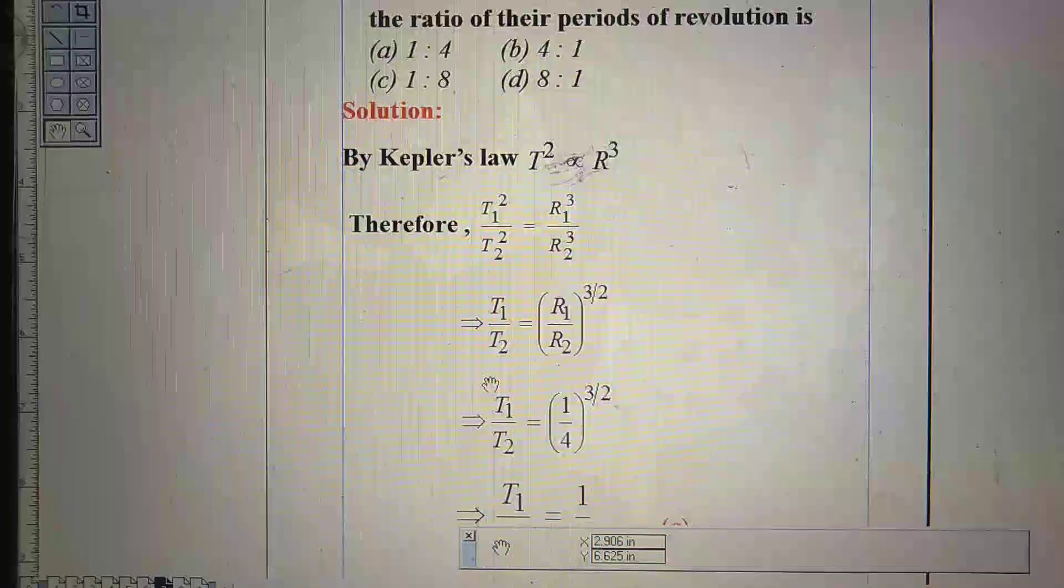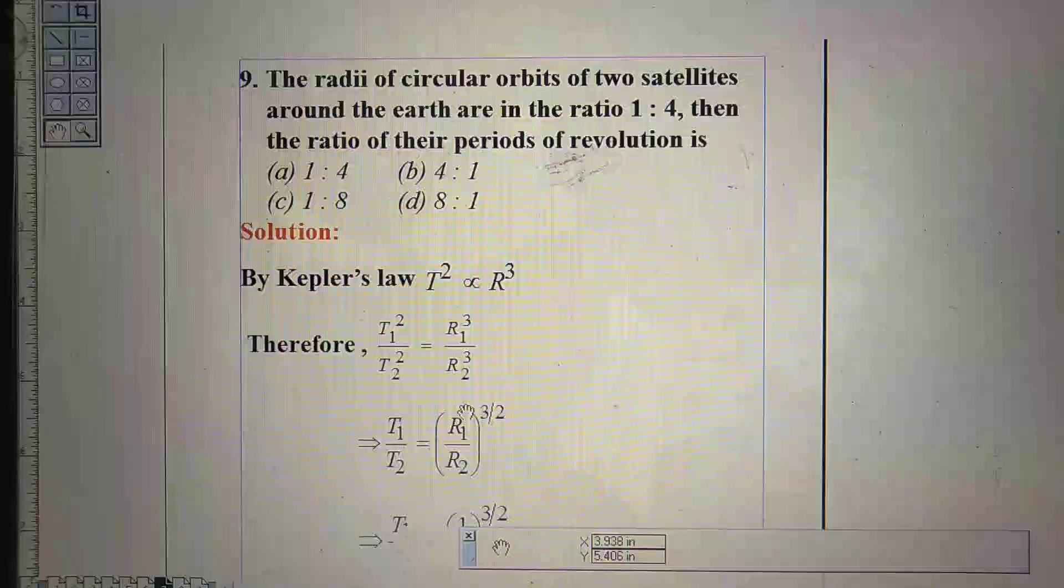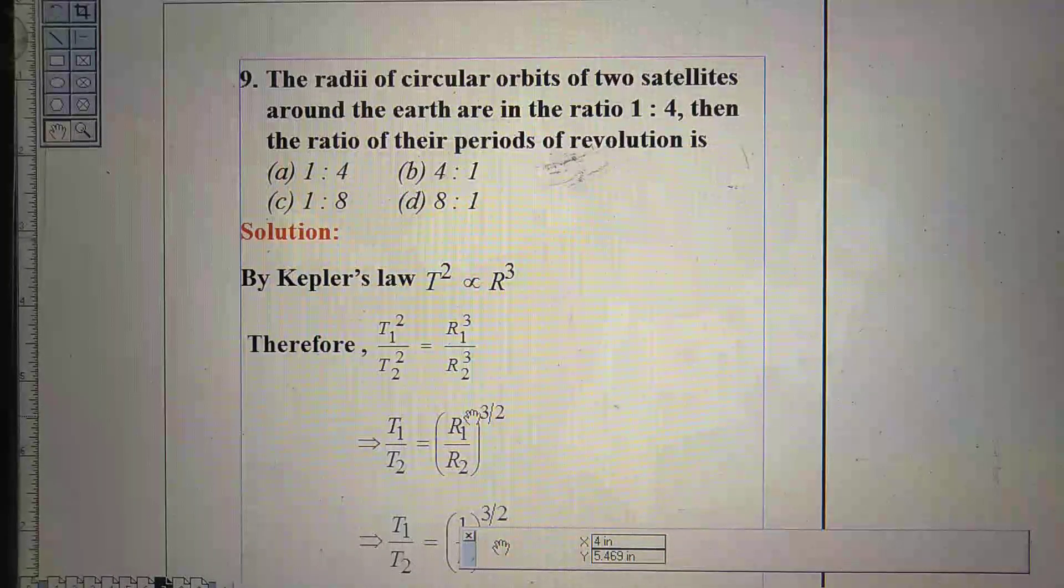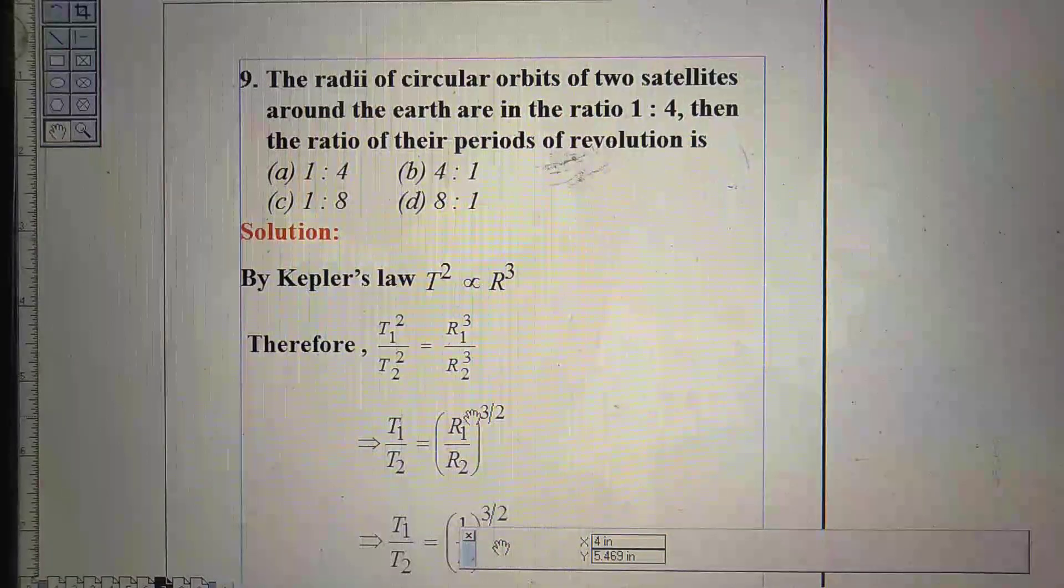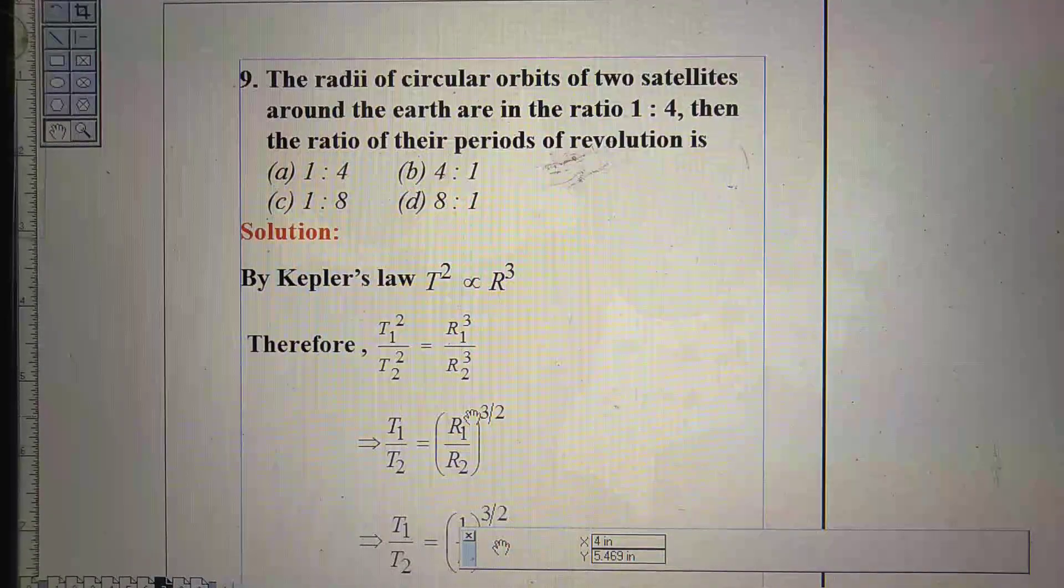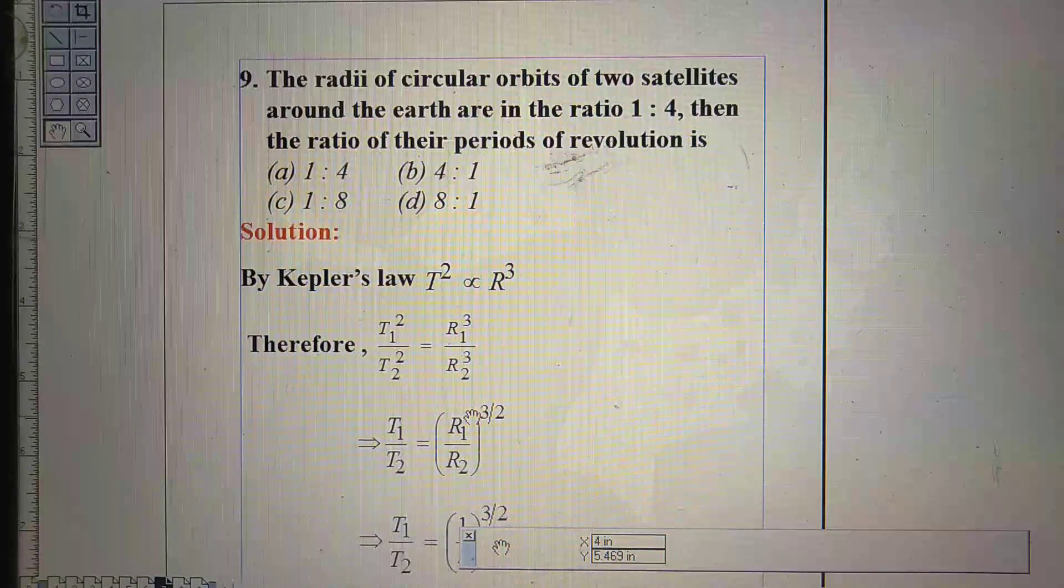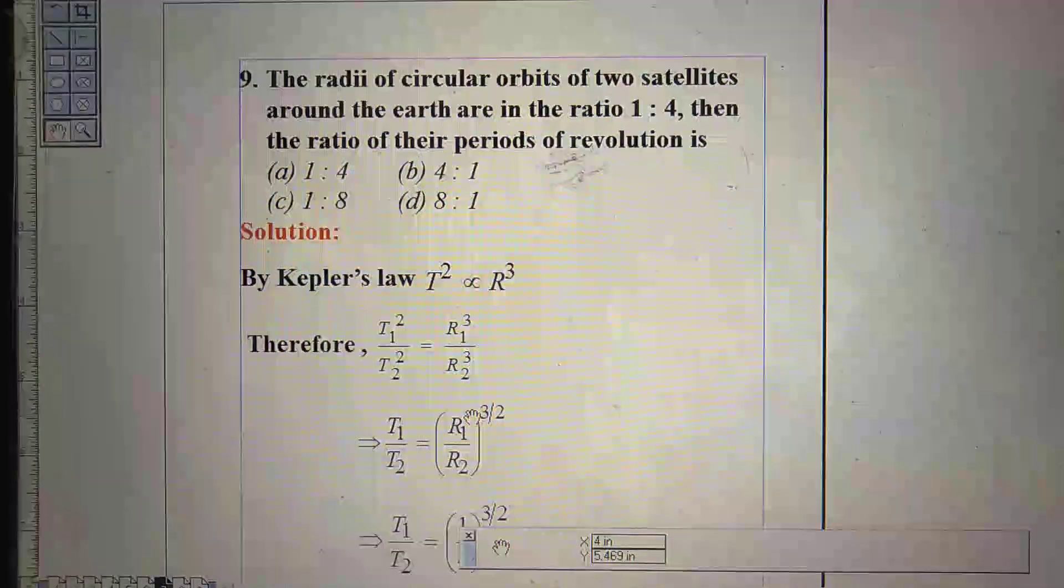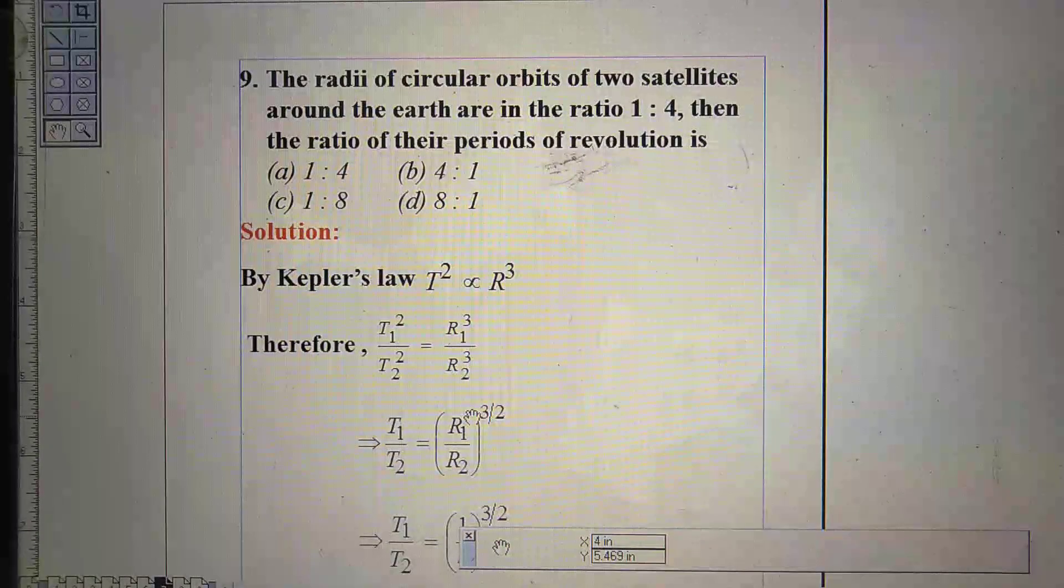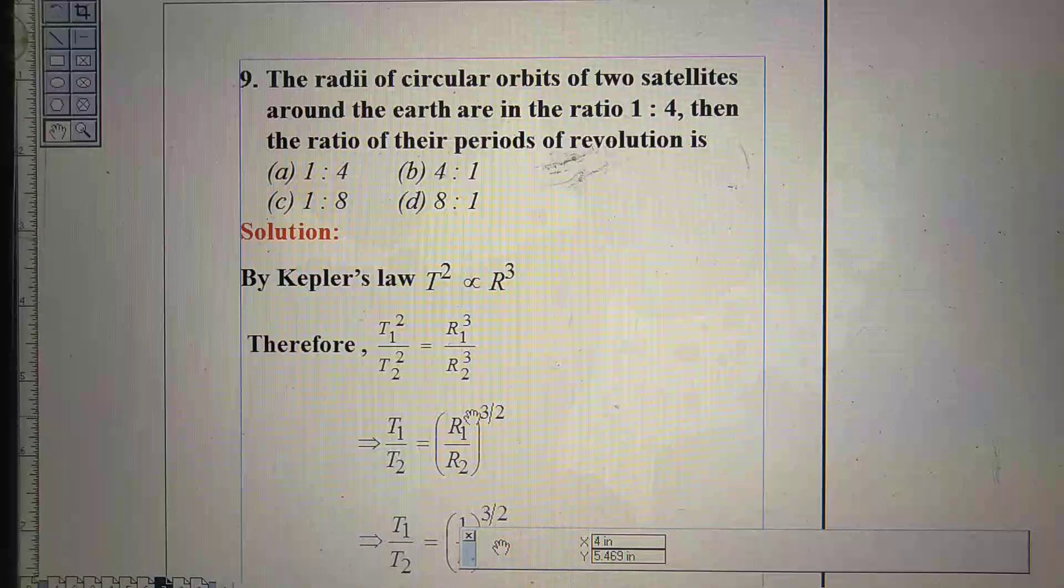Fourth question: The radii of circular orbits of two satellites around the Earth are in the ratio 1 is to 4. Then the ratio of their periods of revolution is option A, 1 is to 4, Option B, 4 is to 1, Option C, 1 is to 8, Option D, 8 is to 1.